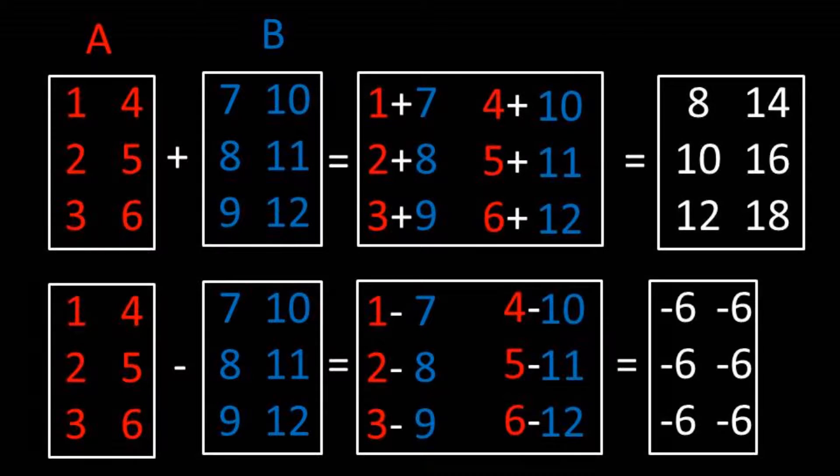It is as simple as taking the number at a given position designated by which row and column it is in, in matrix A and adding or subtracting that number by the number that is in the same position in matrix B.